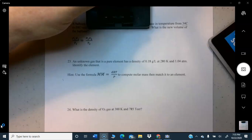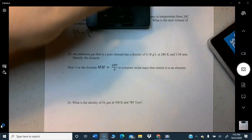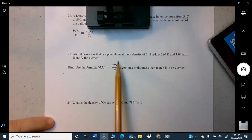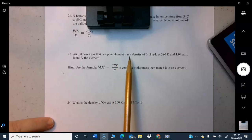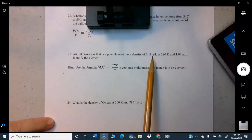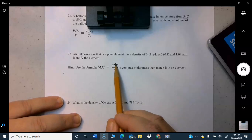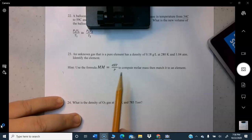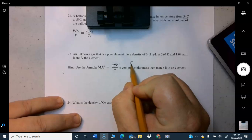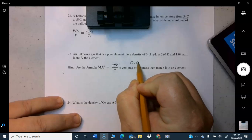We're going to do one of the molar mass density problems. An unknown gas that is a pure element has a density of 0.18 grams per liter at 280 Kelvin and 1.04 atmospheres. Identify the element. This does have the gas constant in it. Now we saw in a previous problem that there was a different gas constant for this.